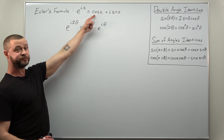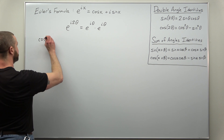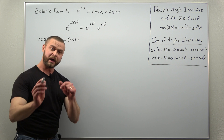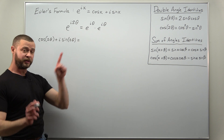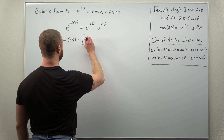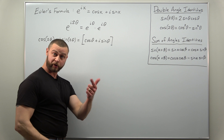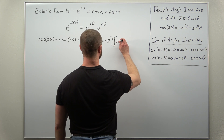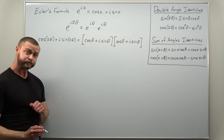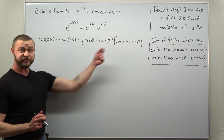On the left side we're going to get cosine of 2θ plus i sine of 2θ. On the right side we apply Euler's formula twice and multiply that out: (cosθ + i sinθ) times (cosθ + i sinθ). All we have to do to derive both double angle identities is just multiply that out.